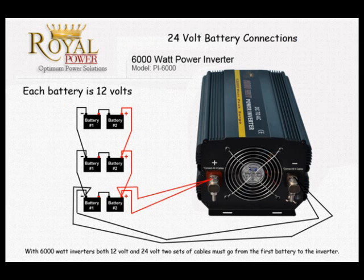Now let's take a look at this diagram here, which will show six 12 volt batteries — three sets of 12s being connected in series to make three 24 volt batteries, and then connected in parallel to retain the 24 volt setup to be used with a 6000 watt DC to AC 24 volt power inverter.